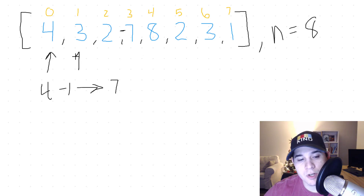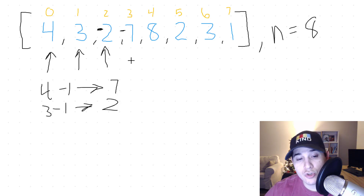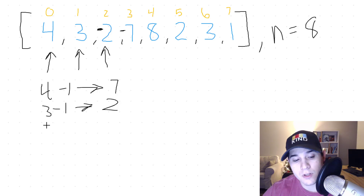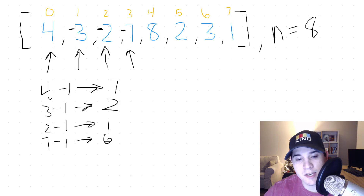Then we continue iterating. We have a three — three minus one gives us index two, and we find a two. This number is not negative, so we just flip the sign; now we have negative two. We go to the next value and do two minus one — but we want to use the absolute value of the number we're looking at, so we do two minus one, which is index one. That number is three, and we flip that sign. Then we do seven minus one, which gives us index six, and we flip that number to negative three.